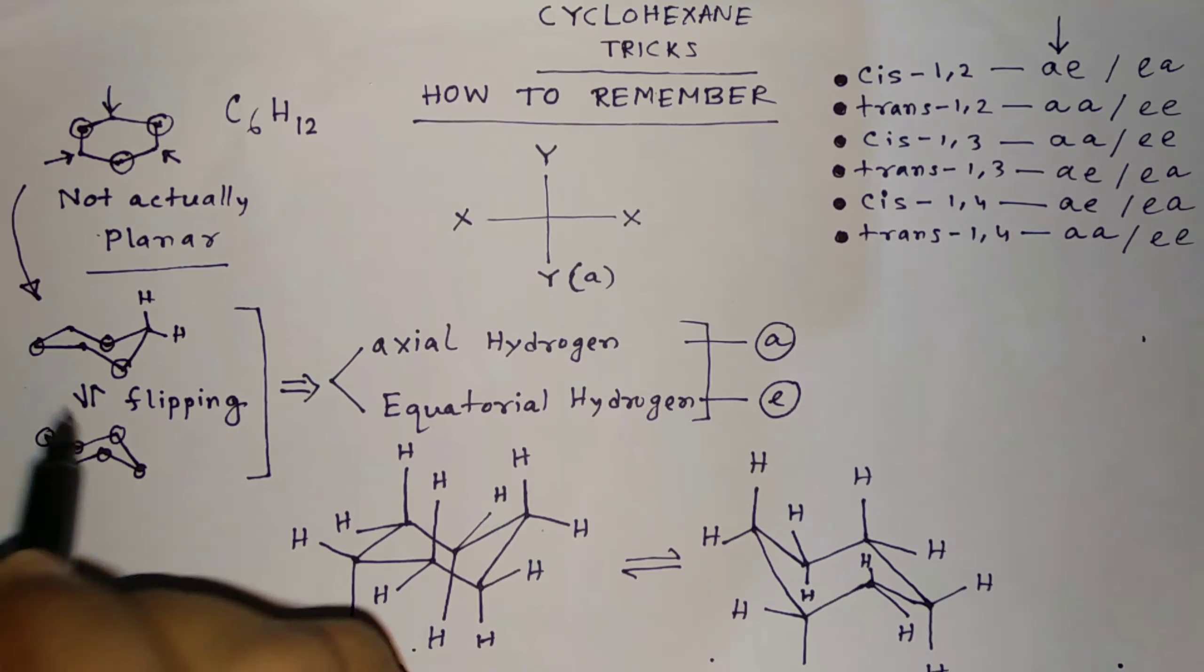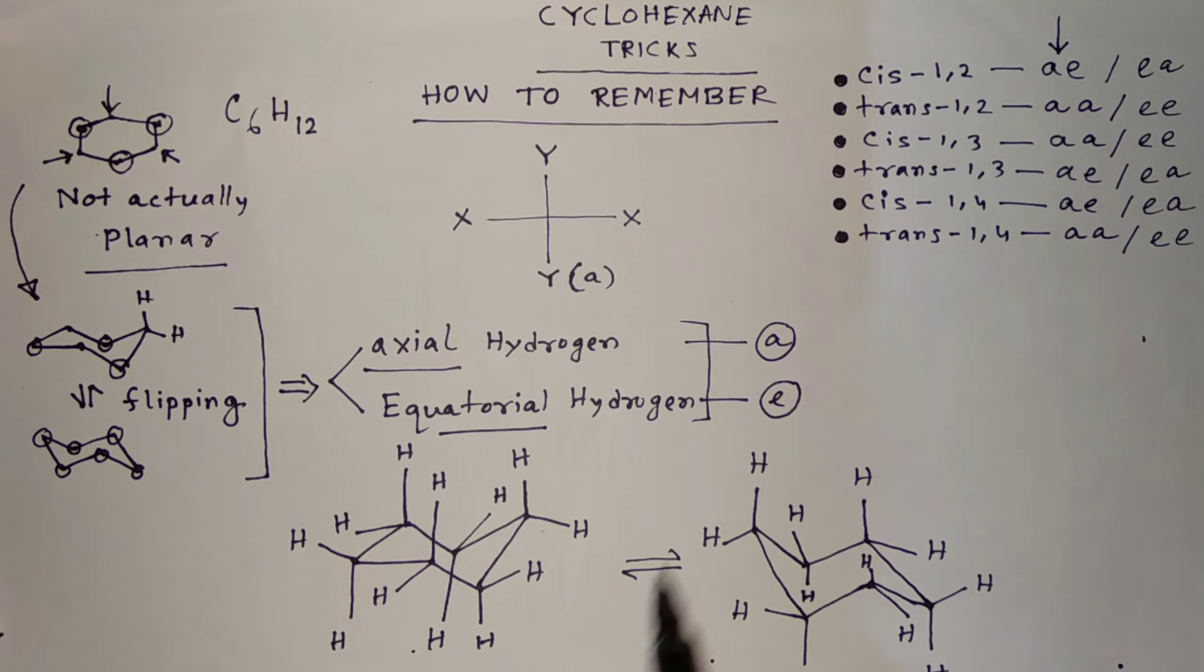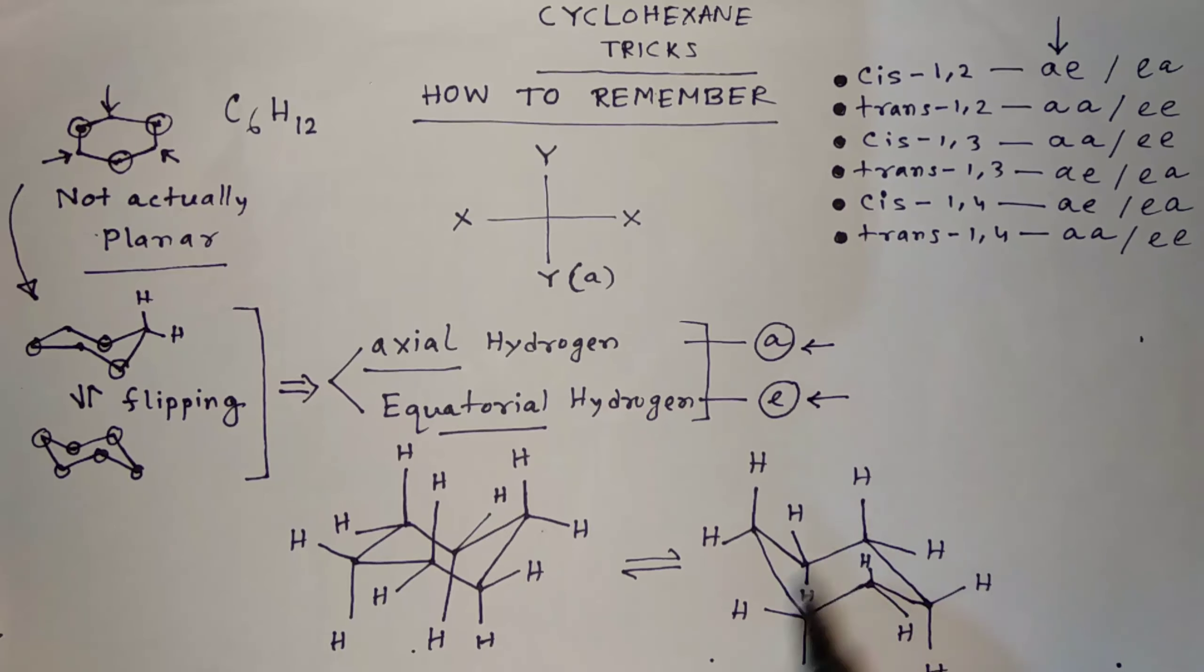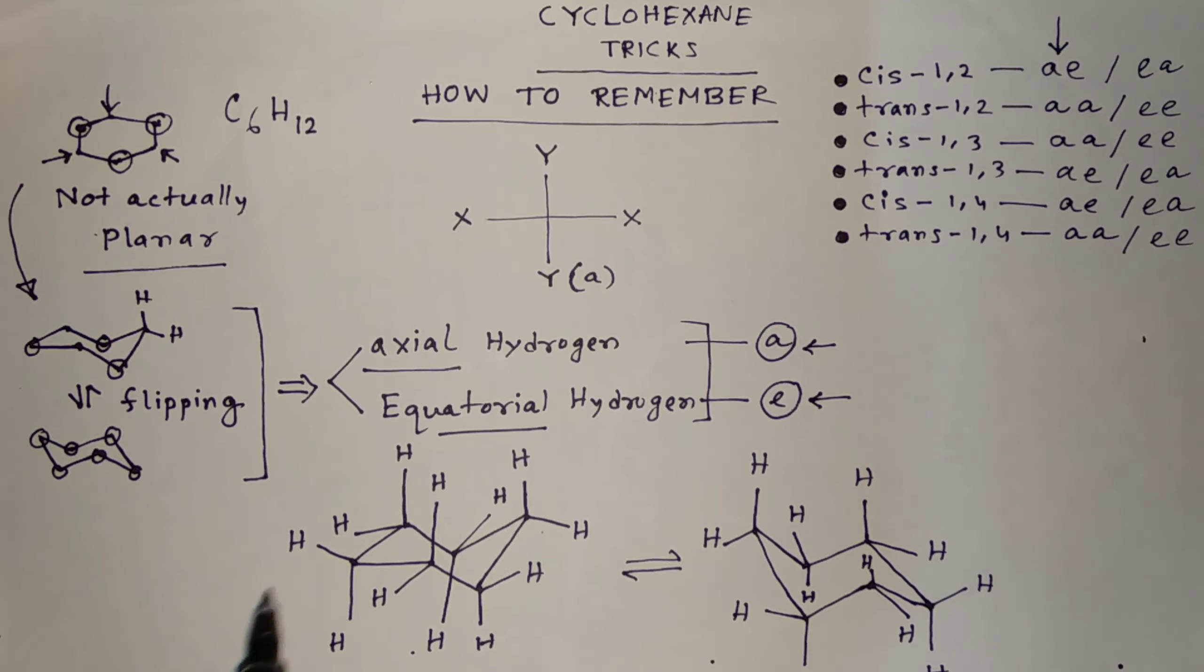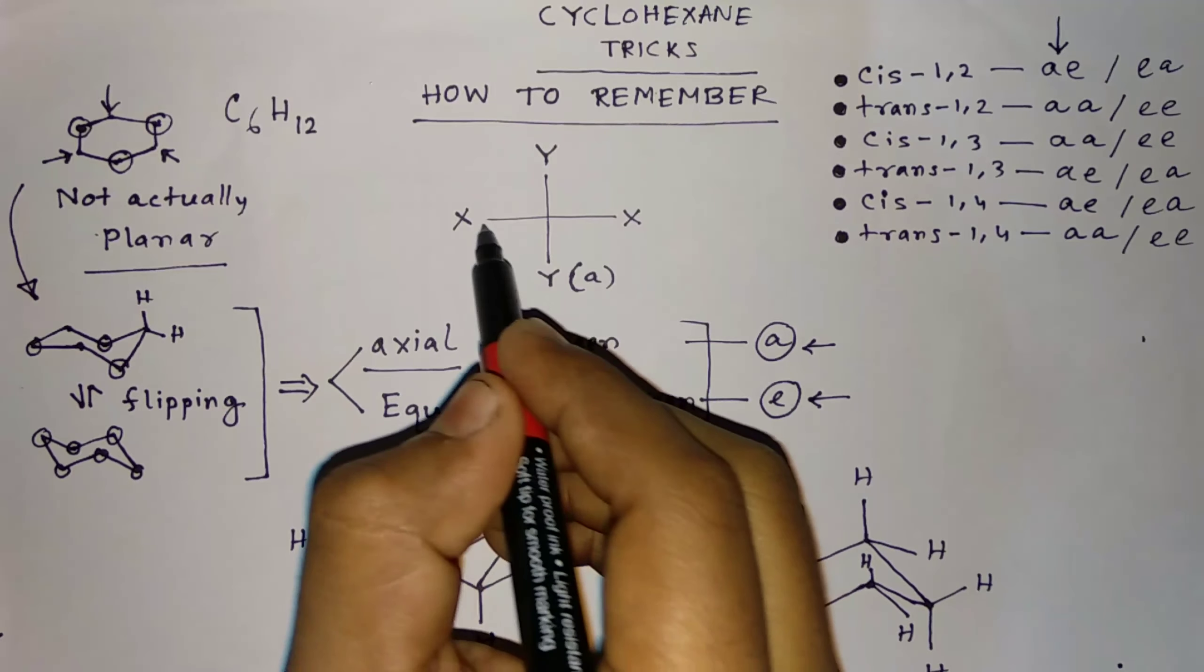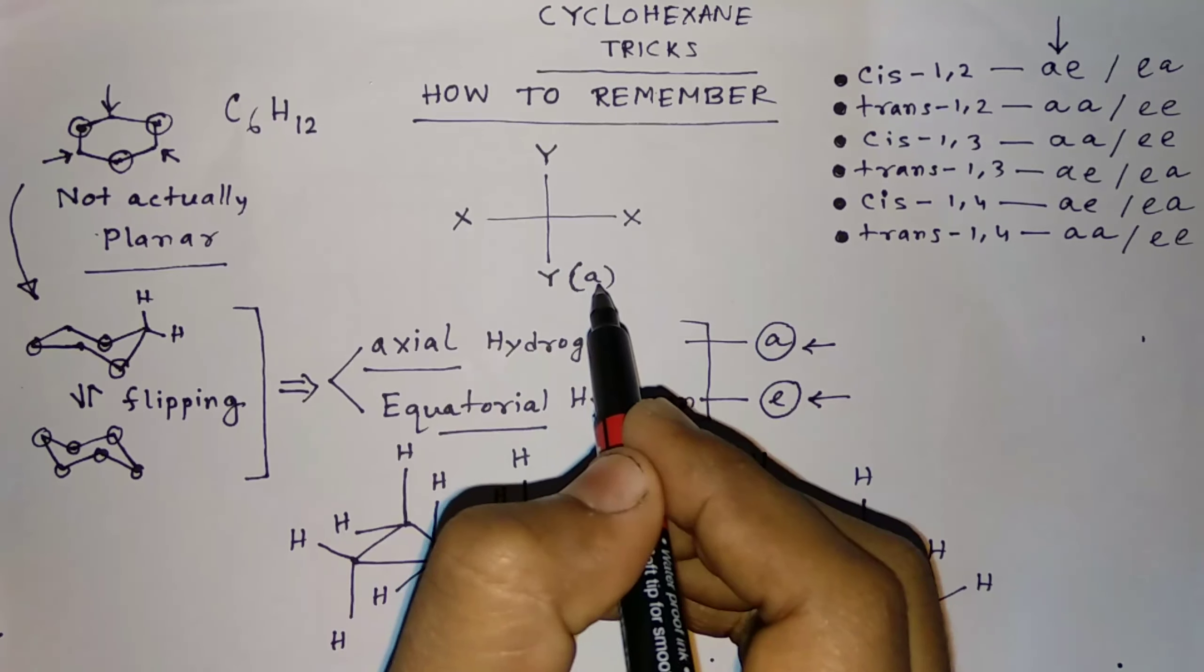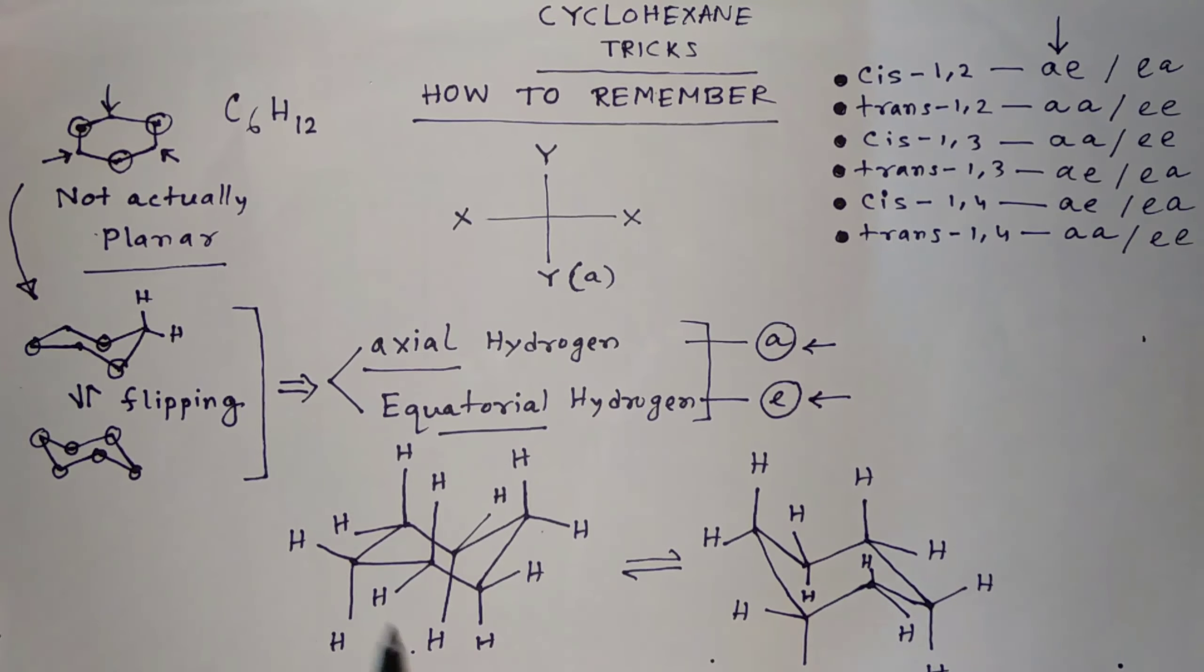Here also each corner has two hydrogens. So these two hydrogens are divided into two parts: axial hydrogen and equatorial hydrogen. Axial hydrogen is represented by A, I am representing, and equatorial hydrogen is represented by E. So if we draw the system like this, we will get the structure.